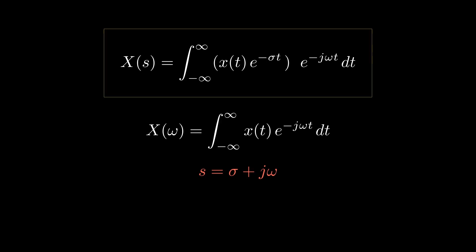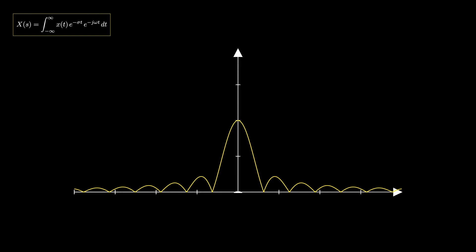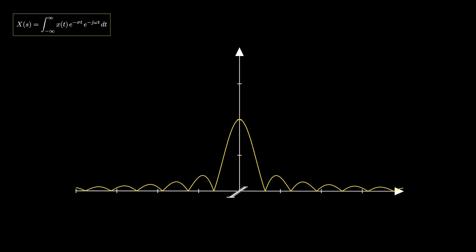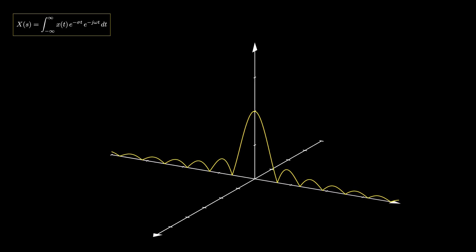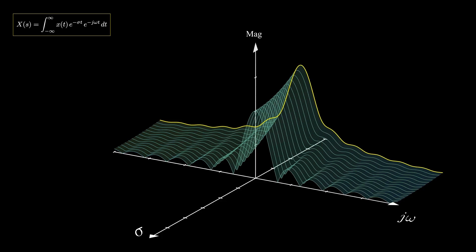This factor is known as the convergence factor, because it sometimes helps the Fourier transform to exist — meaning the Fourier transform integral converges. Sigma can take any value from minus infinity to plus infinity, provided that the Laplace integral converges. Substituting sigma equal to zero, the Laplace transform equals the Fourier transform. For instance, the Fourier transform of the rectangular pulse has the shape of a sinc function. At sigma equal to zero, the Laplace transform is the same as Fourier. If we sweep sigma for its allowed values and take the Fourier transform at each value of sigma, we get the entire Laplace transform function.